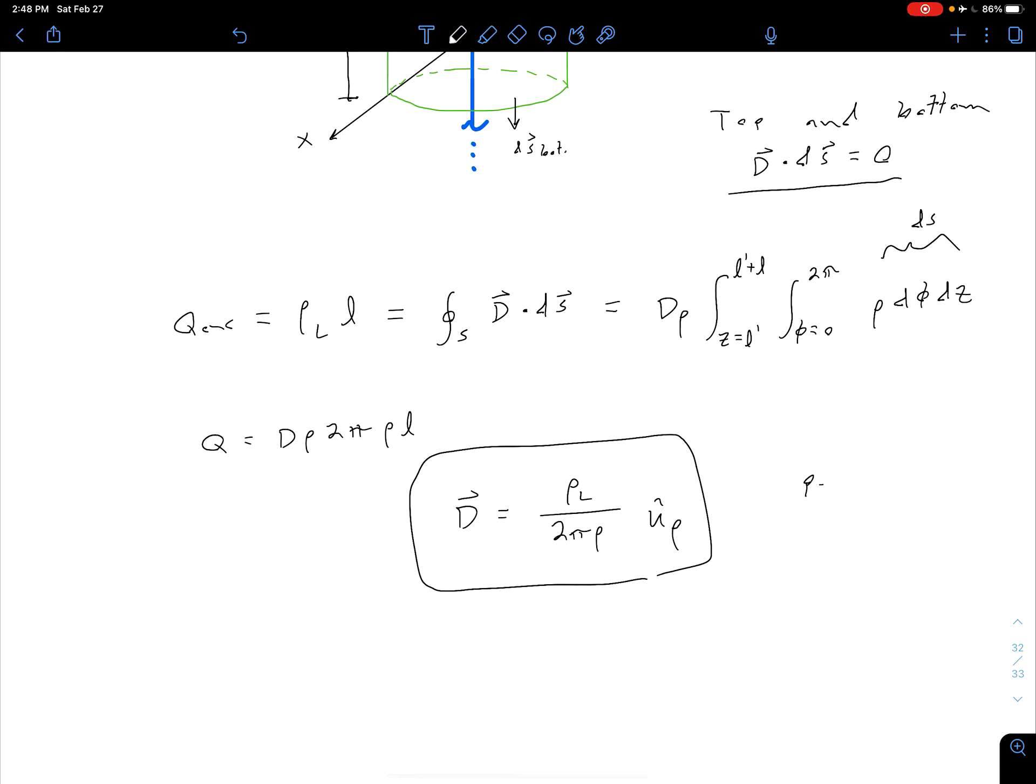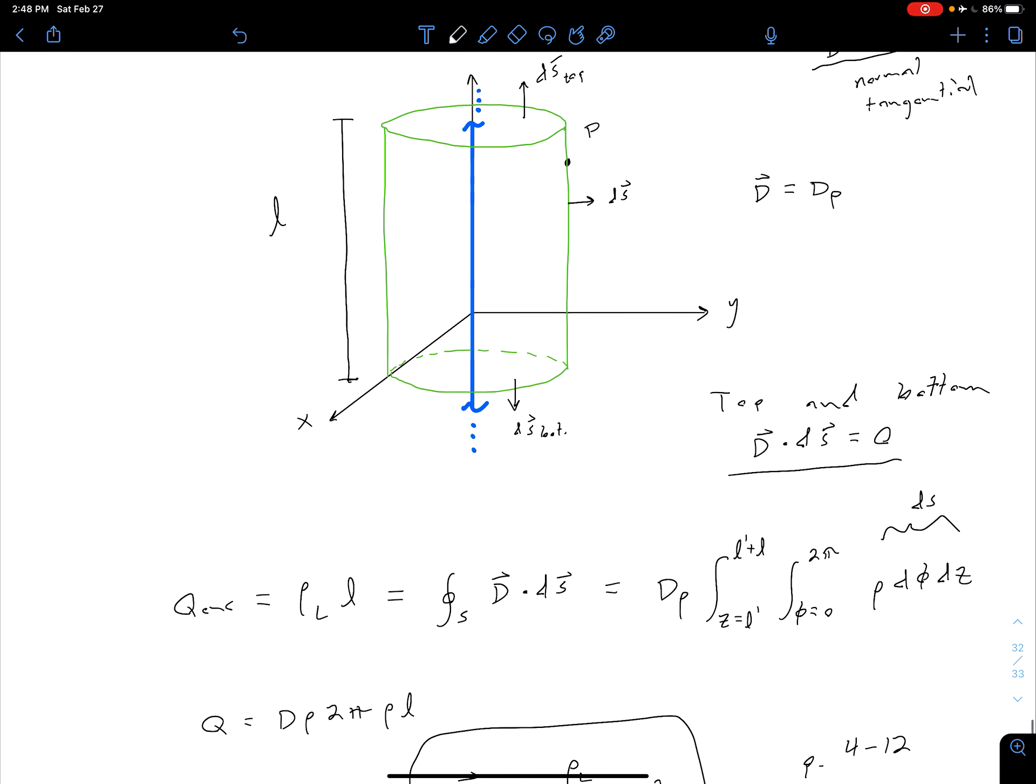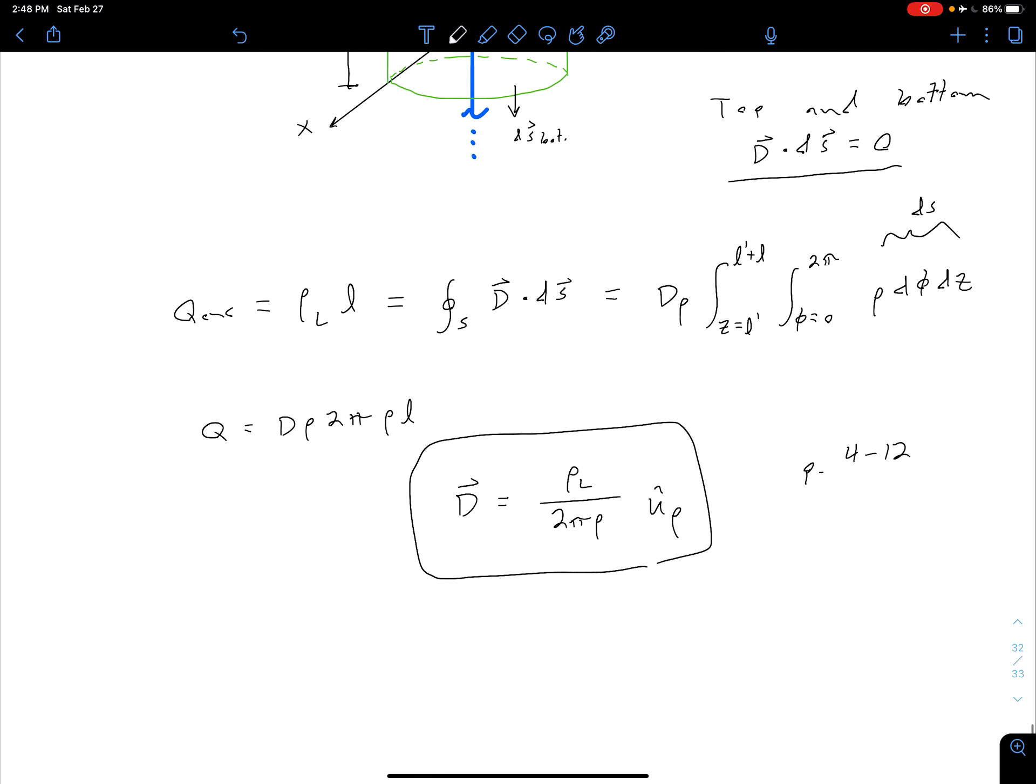And so we can compare this to the expression for our electric field that we had on page 412. And so remember, for our electric field, we actually considered a finite line charge. We had to go through a lot of messy calculus and trigonometry. And ultimately, we said, well, let's make sort of an approximation to arrive at what we got relatively easy here using Gauss's law.